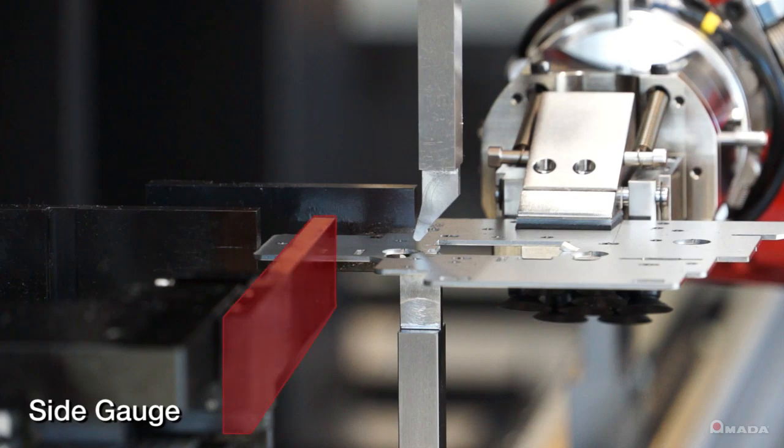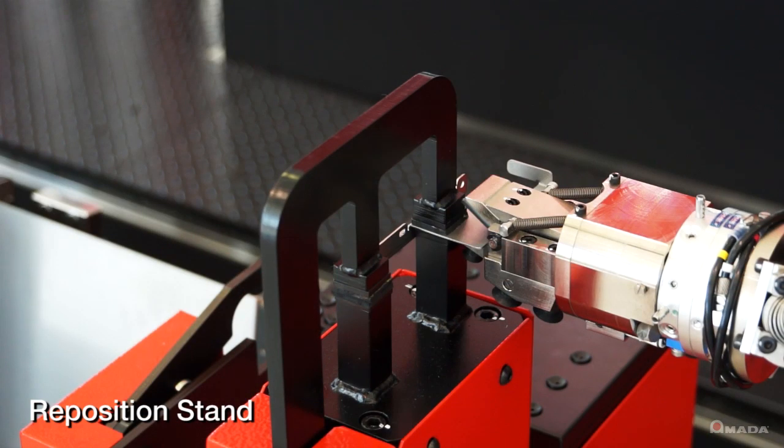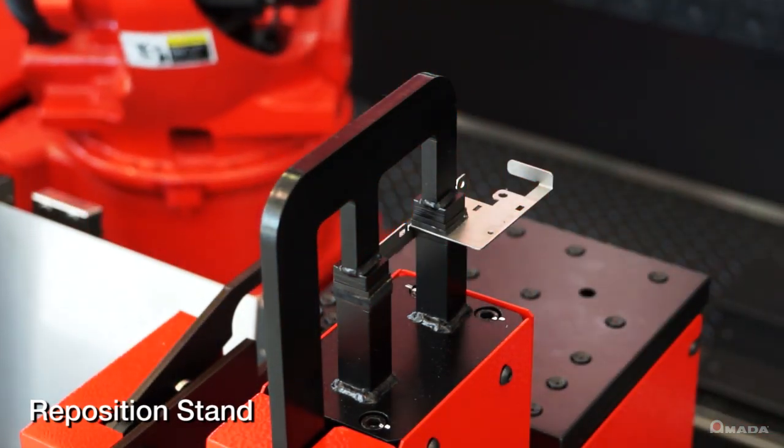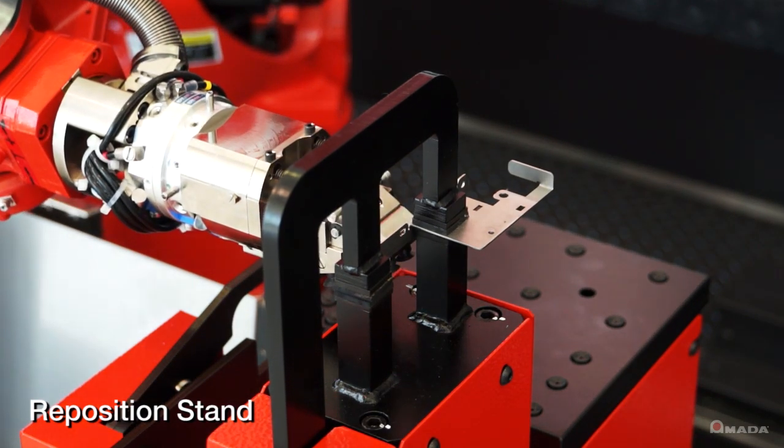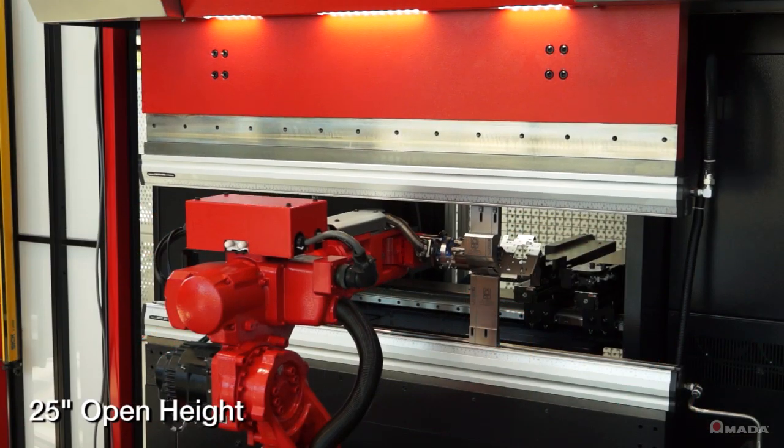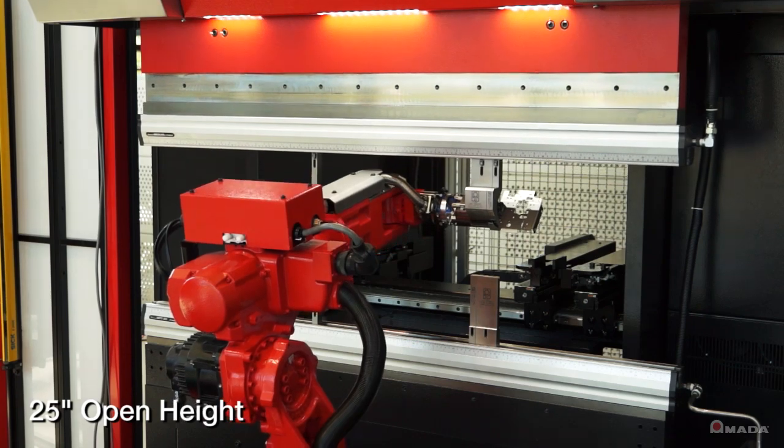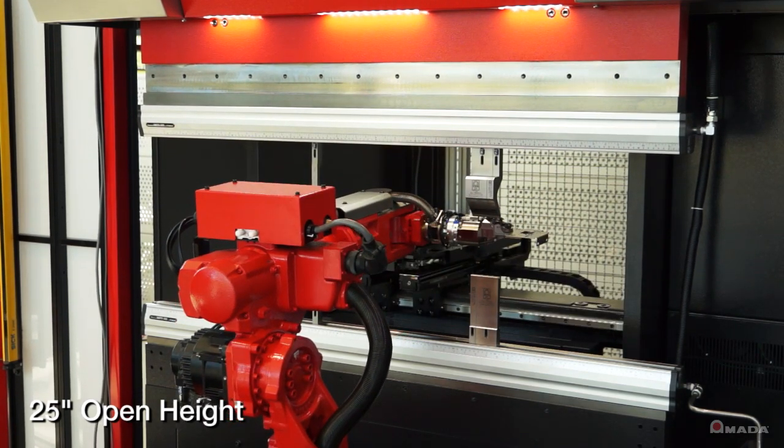There's also a reposition station that enhances the robot's part handling capabilities and the press brake's open height of 25 inches provides clearance for the robot to grip from behind.